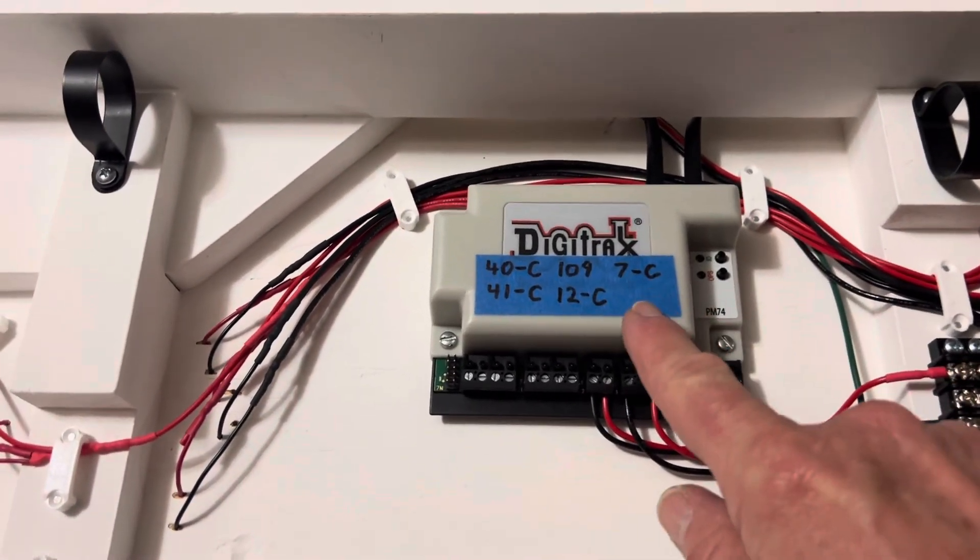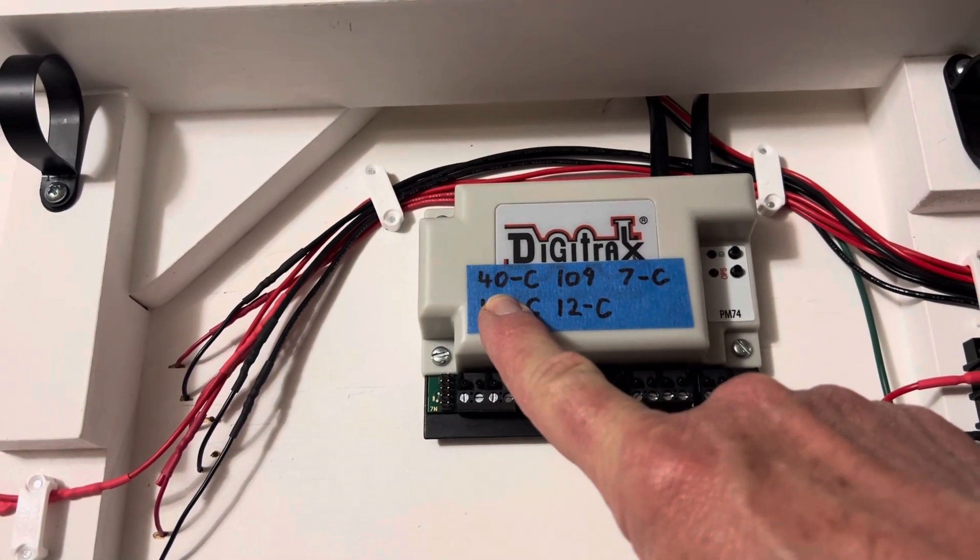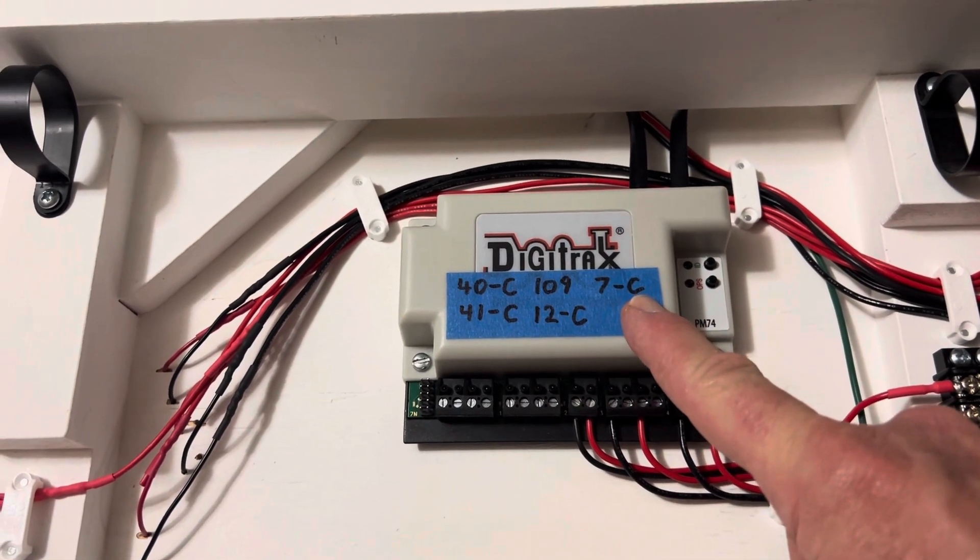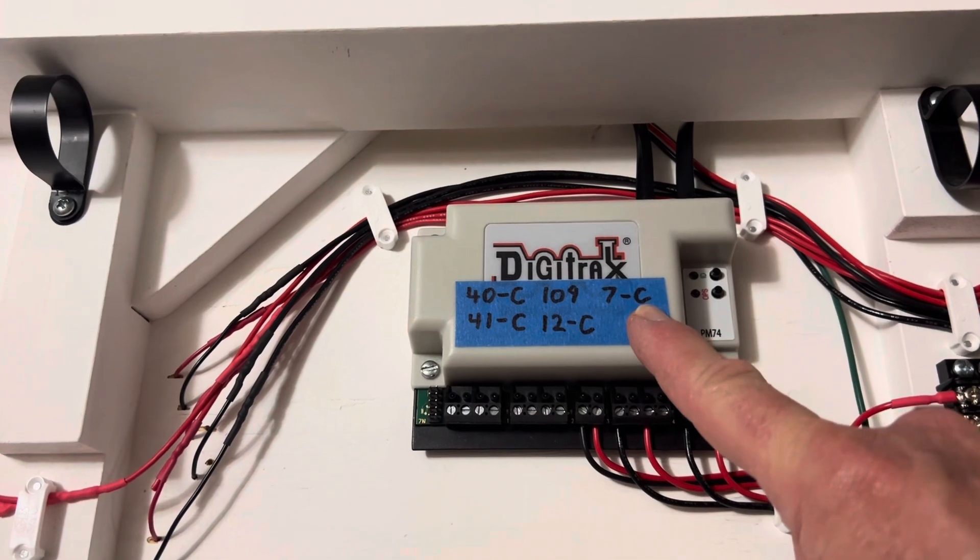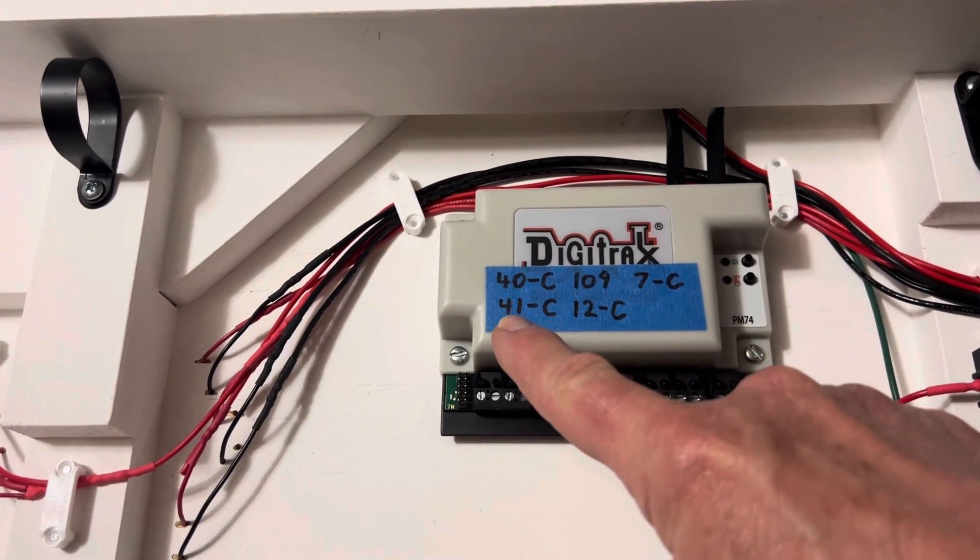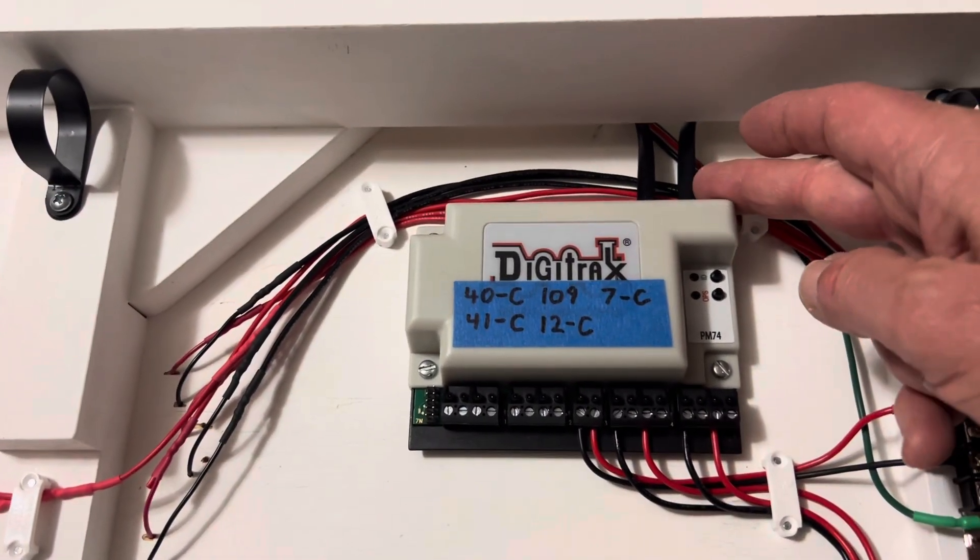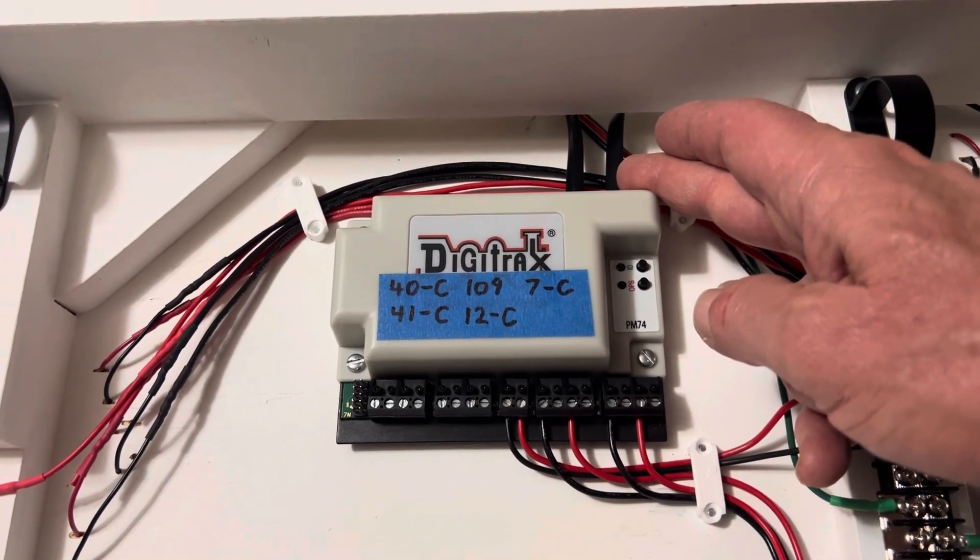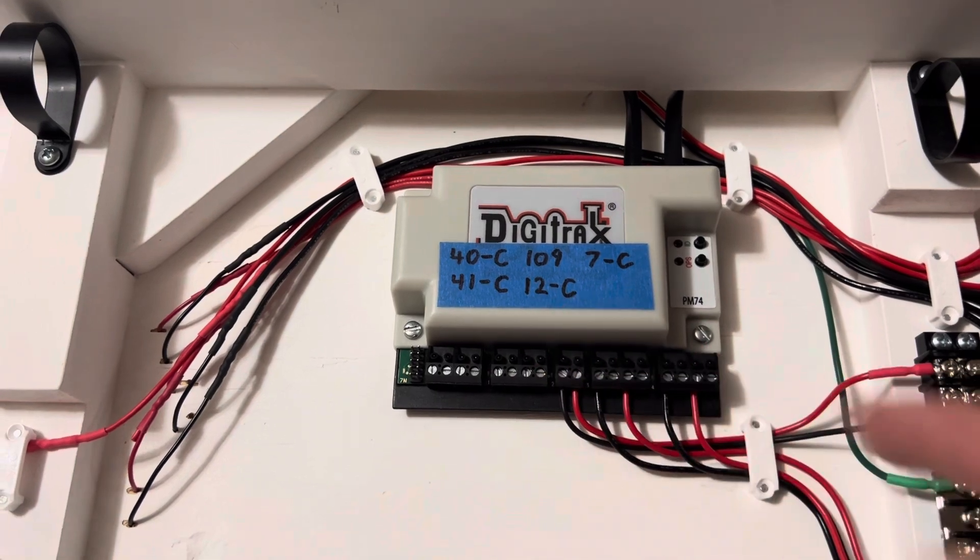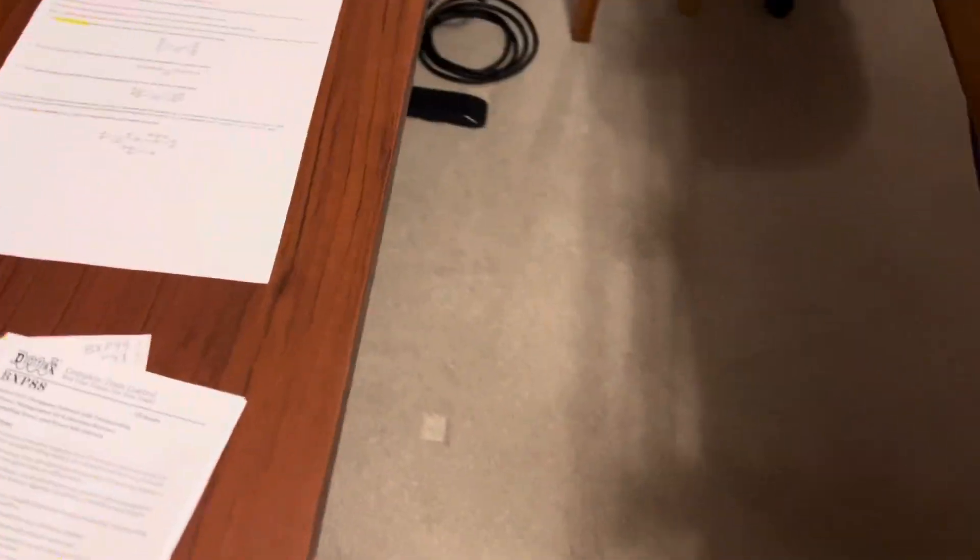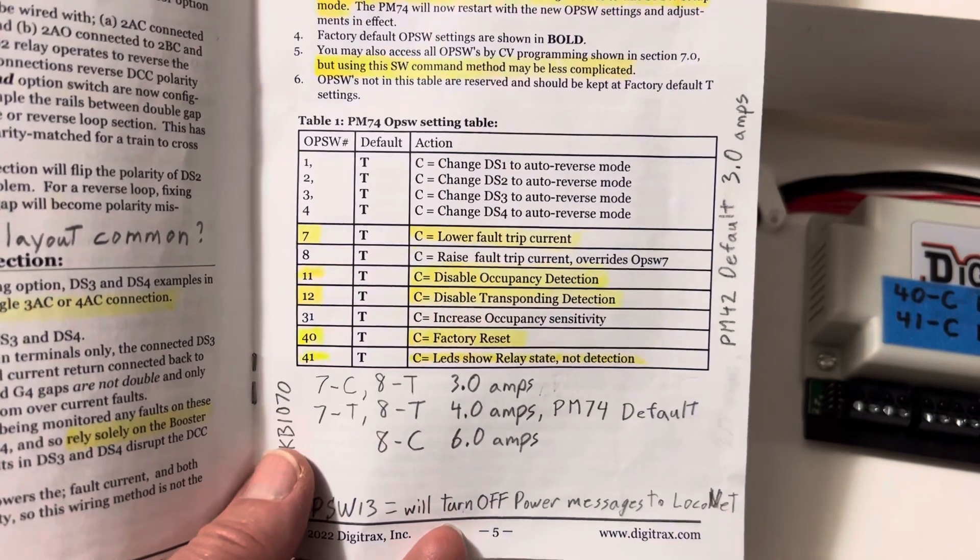This is how I programmed it. I switch 40, I set the C which resets it. That's where I set the address. 7C turns the power down to be 3 amps I believe at the trip. And then 41C changes it to send out the messages over local net like it's a PM42. And then the 12C actually turns off the transponder information.